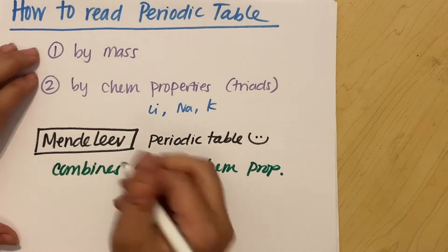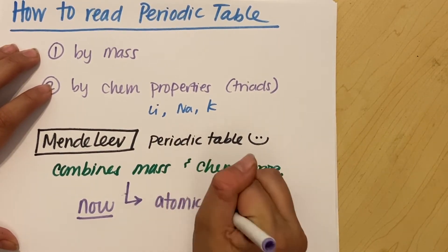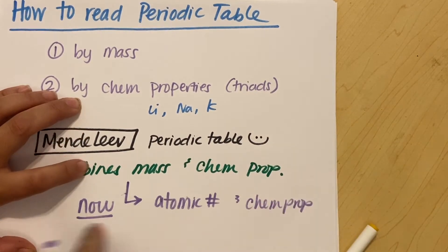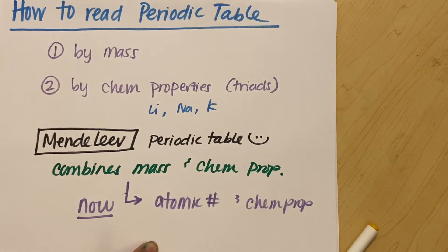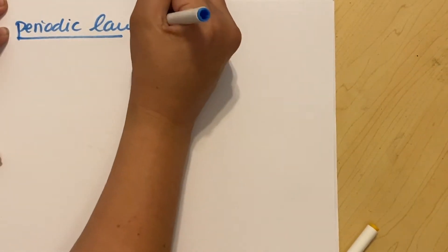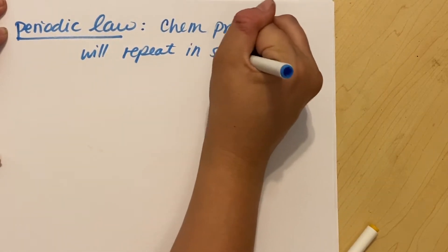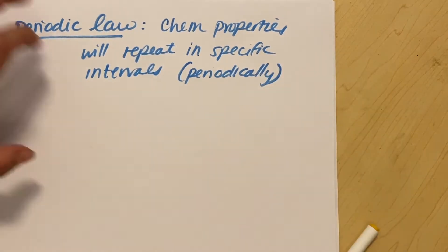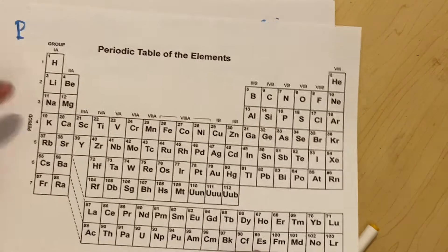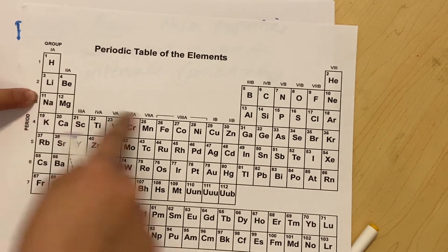Now we've even improved this. We don't use mass anymore — we use atomic number, because atomic number is whole numbers, which is much easier than using the specific mass, along with chemical property. This is the way our modern-day periodic table is organized. The main idea that Mendeleev was able to figure out is periodic law, which basically states that chemical properties will repeat in specific intervals.